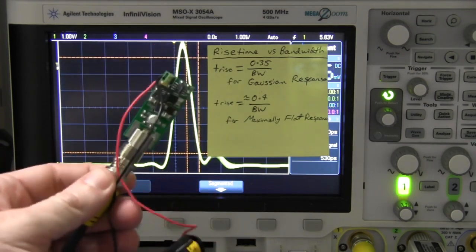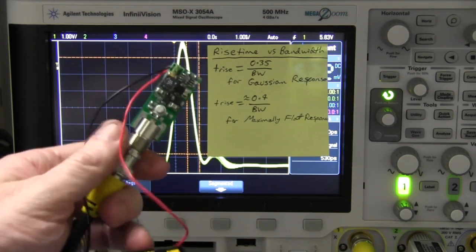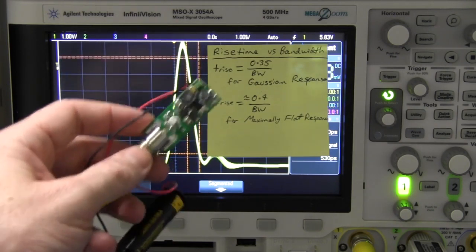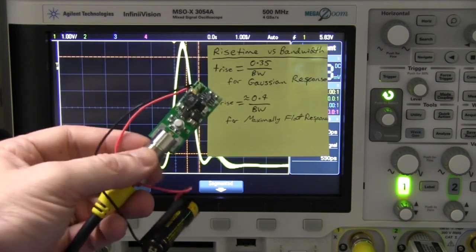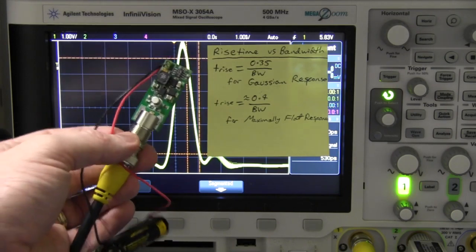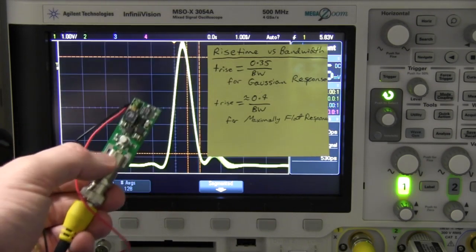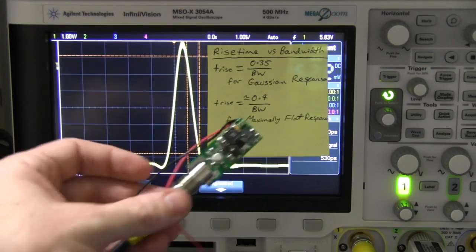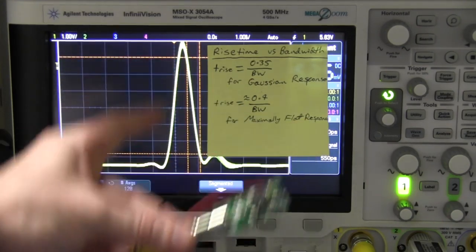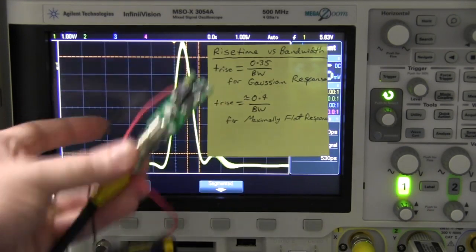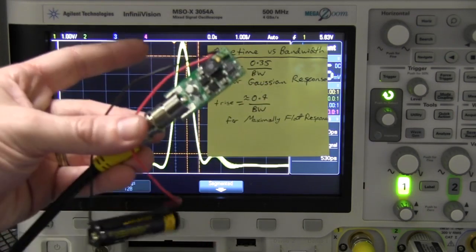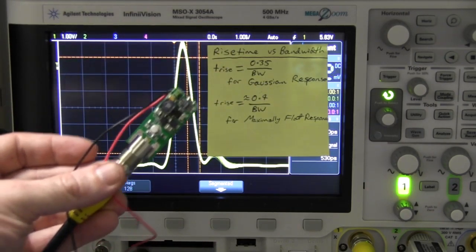This one, although we don't actually know, we haven't actually measured the absolute rise time of this thing, so we don't know what it is, but we know it's going to be in the order of 300 picoseconds or thereabouts. It's only like three times, just maybe three times as good as the oscilloscope, so it's going to contribute a little bit. Ideally you're going to want five times better, but this will certainly do the job for most oscilloscopes up to 500 megahertz bandwidth.